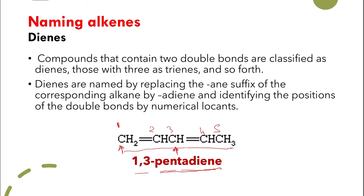If there are three double bonds, we will give each double bond its number. We will number the compound in the positions that will give all the double bonds the lowest possible number, and then we say 'triene'.